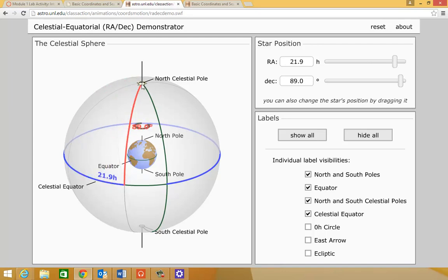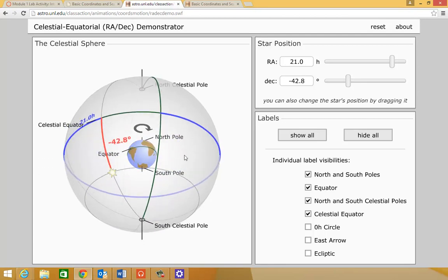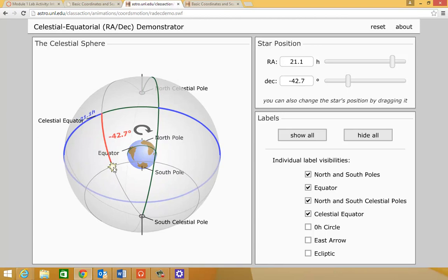When you're talking about stars that are below the celestial equator or south of it, we don't necessarily say south. We typically call those negative values. Any star that is south of the celestial equator is given a negative declination value until you get to negative 90, which is the south celestial pole.